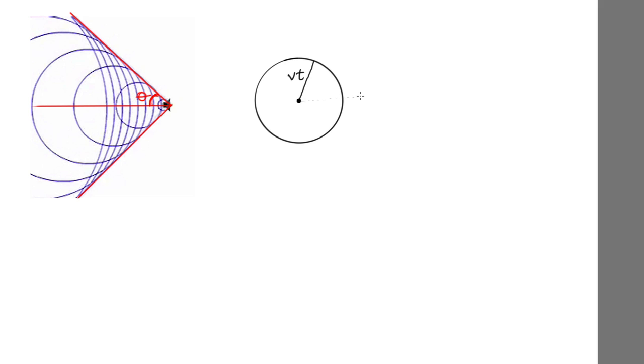Now, in the same time, the jet has actually traveled a bit further than that. It's traveled some distance here, v s t. Now, you can see at that point, the jet's going to continue to let out these sound waves. So we'll have the smaller circles centered on its path as it travels along. So we have a series of circles like this.